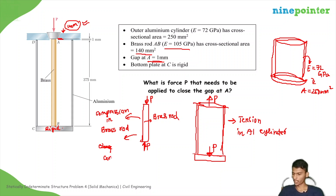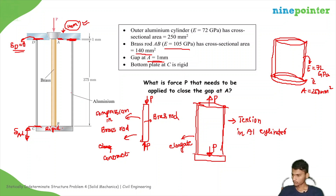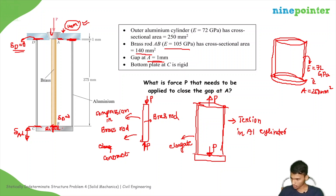Now observe: the overall elongation of the aluminum rod at C — C will move by Del_AL. The brass rod is being compressed. At B, the deformation is zero. But at A, del_A is not zero — it is moving downwards. So the compression of the brass rod is contributing to closing the gap. The tension in the aluminum cylinder — if the aluminum rod goes down, then the brass rod will also come down — is also contributing to closing the gap.